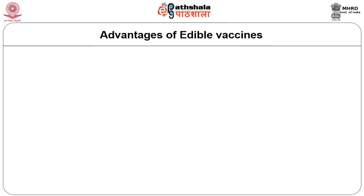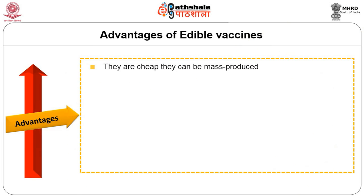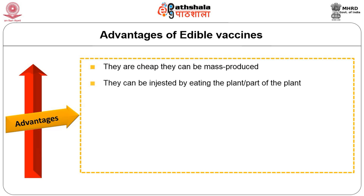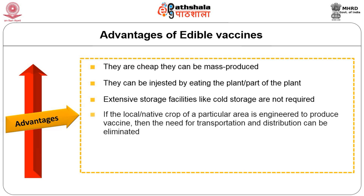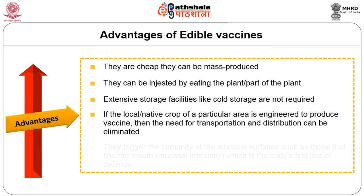Now we will look into the advantages and disadvantages of edible vaccines. Advantages: number one, they are cheap and can be mass-produced; number two, they can be ingested by eating the plant, so the need to process and purify does not arise; number three, extensive cold storage facilities are not required; number four, if the local crop of a particular area is engineered to produce the vaccine, the need for transportation and distribution can be eliminated; number five, they trigger immunity at the mucosal surface, which is the body's first line of defense.